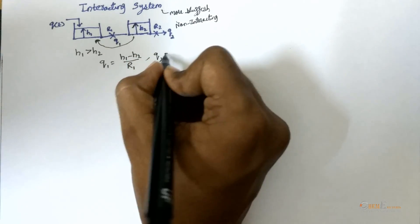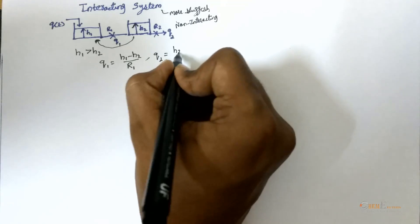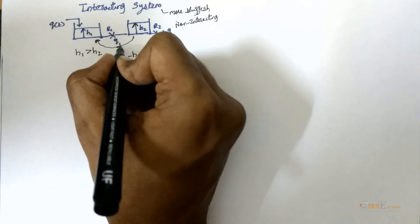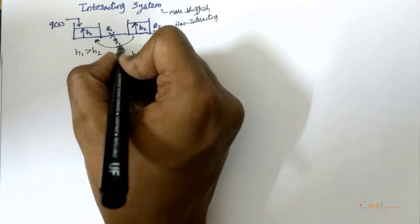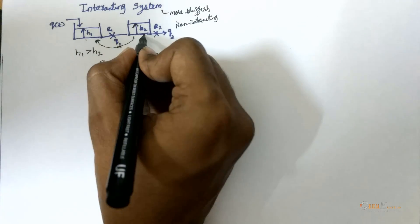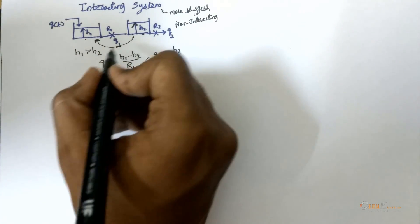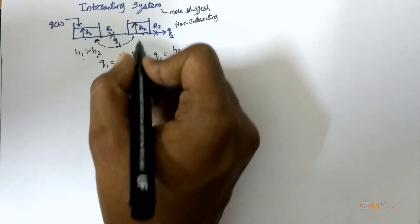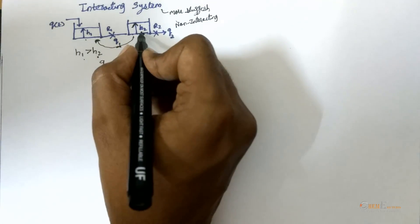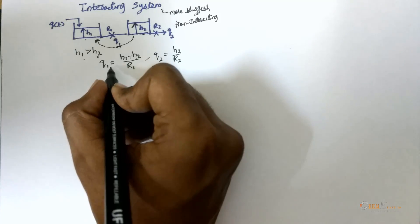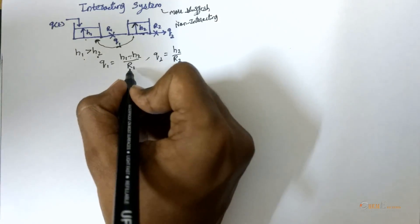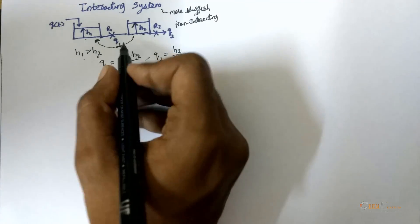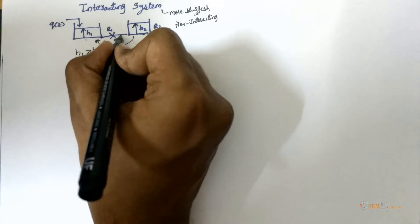Q2 is equal to H2 / R2. Here Q1 is dependent on both H1 and H2, and since H1 is greater than H2, Q1 = (H1 - H2) / R1. If instead H2 is greater than H1, then Q1 will be equal to (H2 - H1) / R1. You can consider the flow in either manner.